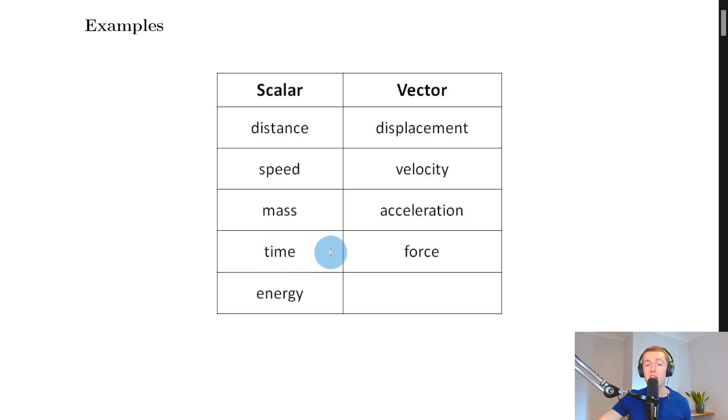We then have time, which is another scalar, because again, we only think about time as a magnitude or a size. We don't think about time as having a direction, because again, that wouldn't really make sense.